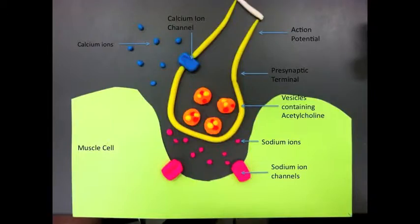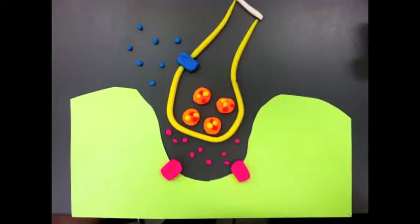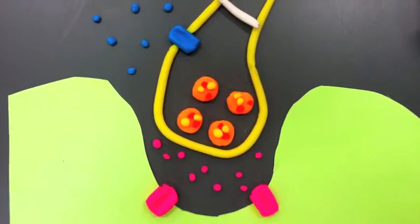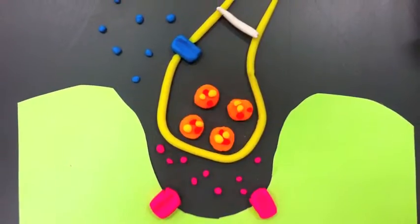This is a synaptic knob and a muscle cell. As the action potential, indicated by the white on the top, moves down the presynaptic terminal, this causes the voltage-gated calcium ion channels to open.